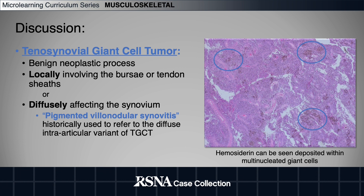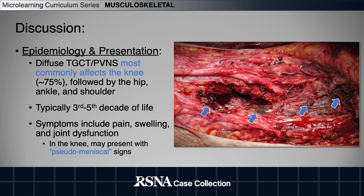Note that though pigmented villonodular synovitis, or PVNS for short, was historically used to refer to the diffuse intra-articular variant of TGCT, tenosynovial giant cell tumor is now technically the preferred histologic term for all sites. Diffuse TGCT most commonly affects the knee, though the hip, ankle, and shoulder are also common sites. It is overall an uncommon disease, with an estimated annual incidence of 1.8 cases per 1 million population, and generally accounts for less than 1% of all benign soft tissue masses.